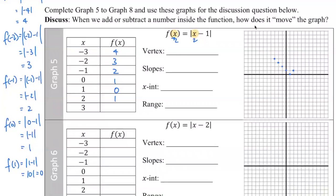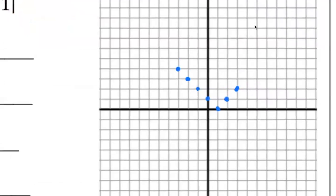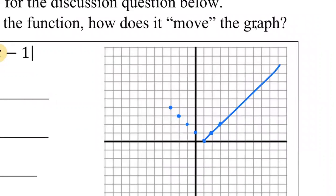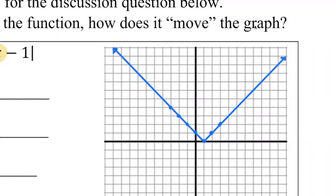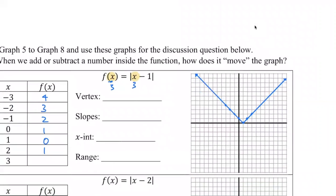For x equals two: two minus one is one, absolute value of one is one — so two comma one. For x equals three: three minus one is two, absolute value of two is two — so three comma two. You can see the V-shape forming. Now we draw the graph connecting the dots and extending the lines to the edge of the graph.